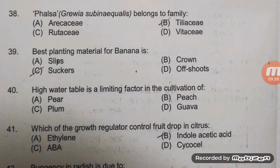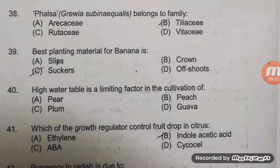Which growth regulator controls fruit drop in citrus? The right answer is B — indolacetic acid. Other than indolacetic acid, 2,4-D is also used — 10 ppm 2,4-D is sprayed two times: first in May and second in September, which directly controls fruit drop.